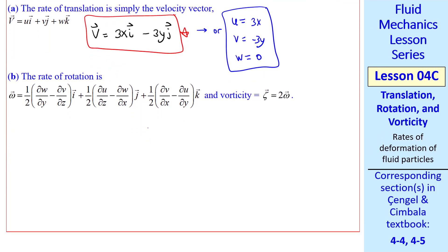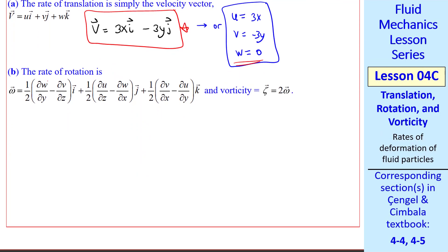Now we calculate the rate of rotation and the vorticity. Since w is 0, the first term goes away. Any derivatives of z are 0 in a 2D flow, so these terms go away. And again, w is 0. Since v is negative 3y, del v del x is 0. And since u is 3x, it's not a function of y, so del u del y is 0. Thus omega is 0, and zeta is also 0.